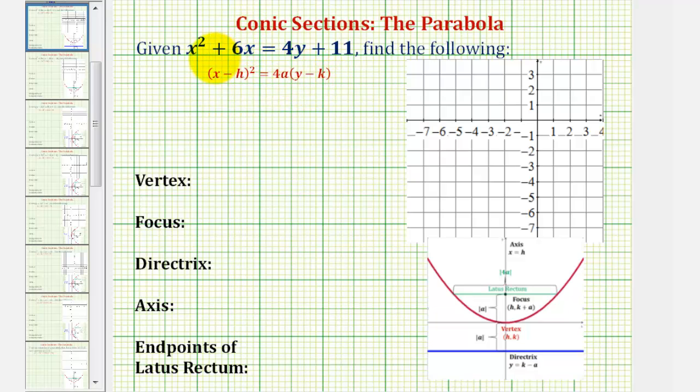So for the first step, we'll have to complete the square on x squared plus 6x to form a perfect square trinomial. To complete the square, we're going to take half of the coefficient of x, or half of 6, and then square it.